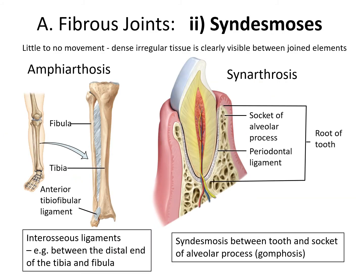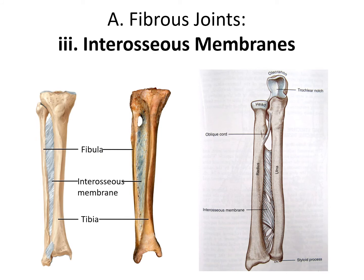Next we have syndesmoses — fibrous joints with no movement or a very small amount. These can be synarthroses like the gomphosis of the tooth, with almost no movement unless you're a child about to lose a tooth, or amphiarthroses with a bit of movement. The example I showed earlier referred to the ligaments that connect the tibia and fibula together. Interosseous membranes are also an example of a fibrous joint — 'inter-osseous' meaning between bone — and we have this thin sheet of connective tissue holding the fibula and tibia together.